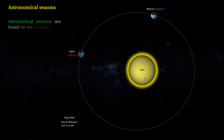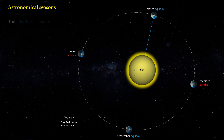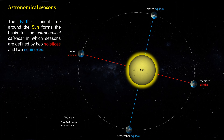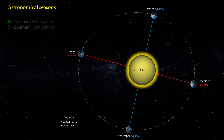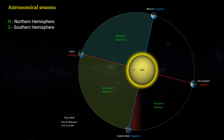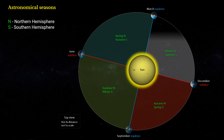Astronomical seasons are based on the position of the Earth in relation to the Sun. The Earth's annual trip around the Sun forms the basis for the astronomical calendar, in which seasons are defined by two solstices and two equinoxes: Spring North/Autumn South, Summer North/Winter South, Autumn North/Spring South, and Winter North/Summer South.